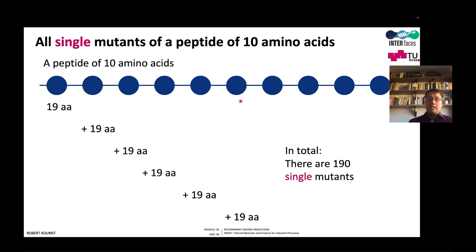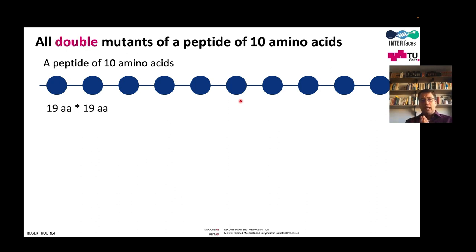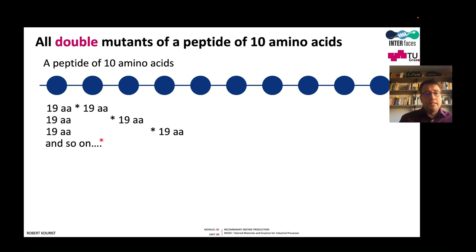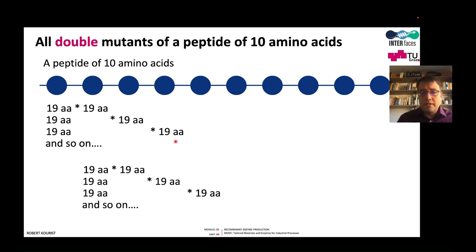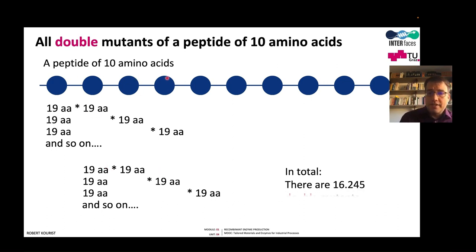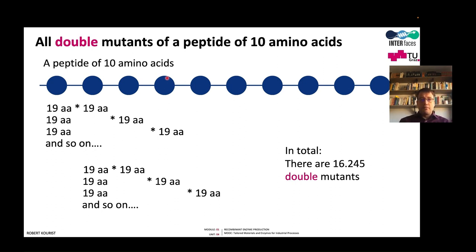These are only the single mutants. If we want to look at all double variants, we have 19 times 19 combinations across positions, giving us 16,245 double mutants of a 10 amino acid peptide. If we look at a larger peptide of 200 or 300 amino acids, the total number of mutants is way beyond our capacity of investigation.